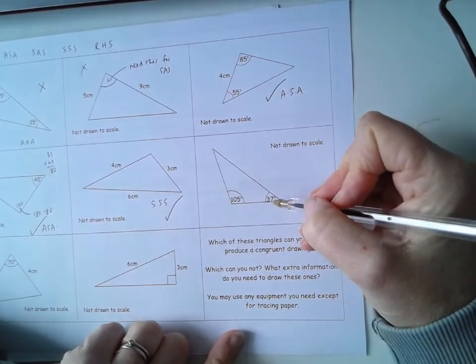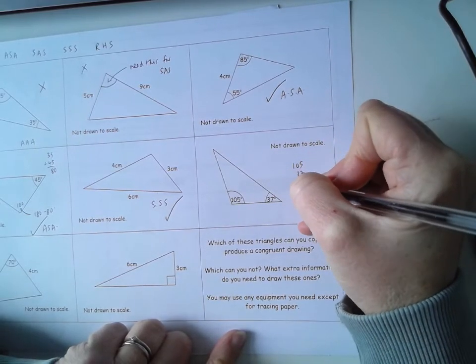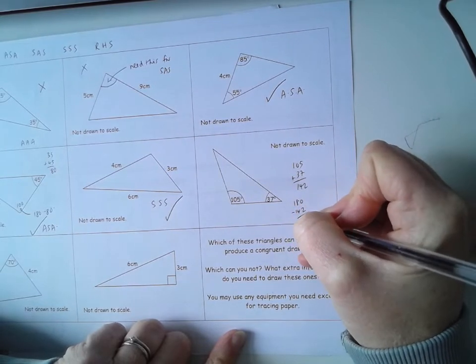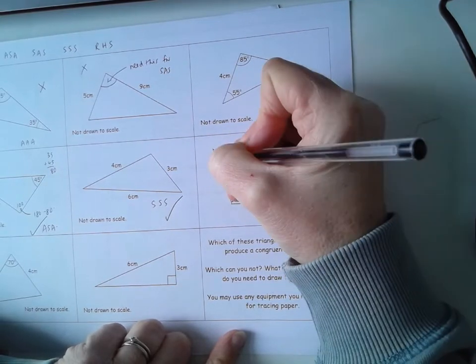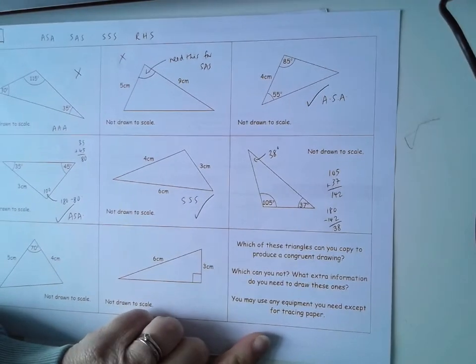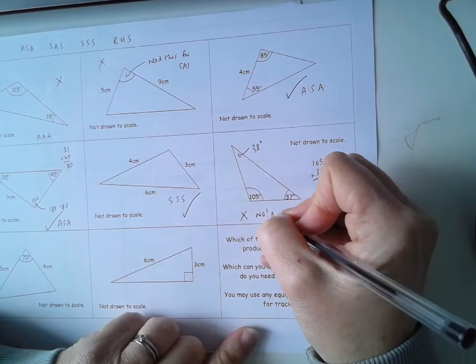Hmm, again we're missing an angle. 105 and 37 is 142 and then 180 minus 142 is what? 38. So we know this is now 38 degrees but the problem is that it's still angle, angle, angle. So it doesn't work. No. Angle, angle, angle.